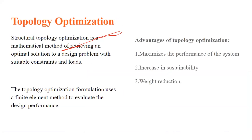Let's first discuss optimization. Optimization is an effective tool to achieve an optimized design in three different ways. There are three optimization methods: shape optimization, size optimization, and topology optimization. Shape optimization involves changing the shape of the geometry in order to achieve the required conditions.